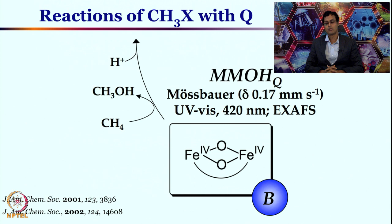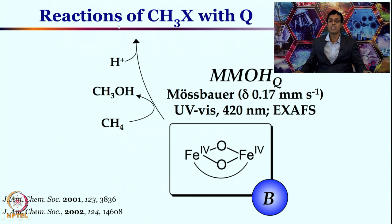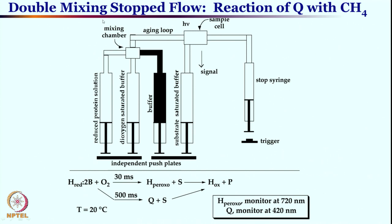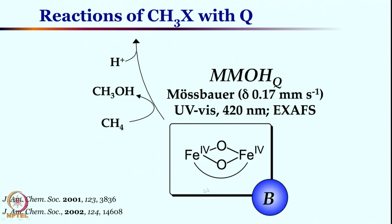A special technique utilized for trapping or forming these intermediates is double-mixing stopped-flow kinetic studies. Intermediate Q is reacted with methane to give the methanol product. We take the reduced protein solution — Fe(II)/Fe(II) — and a dioxygen-saturated buffer, along with another buffer loop containing methane and extra buffer as substrate.